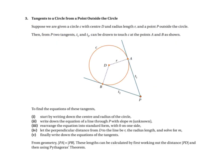The next method is finding the equations of tangents to a circle from a point outside the circle. Given an external point, there are two tangents. The steps are: find the center and radius, write the line through the external point with unknown slope m, rearrange to ax + by + c = 0 form, use the perpendicular distance formula with r as radius, then solve for m.